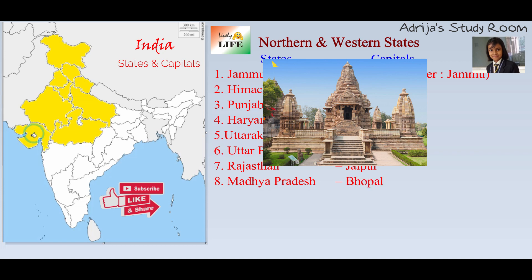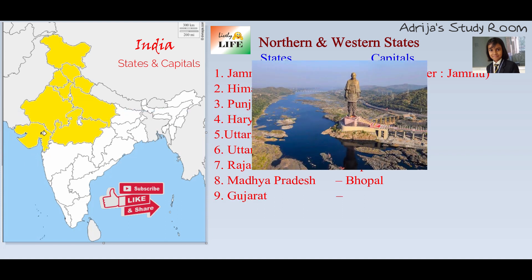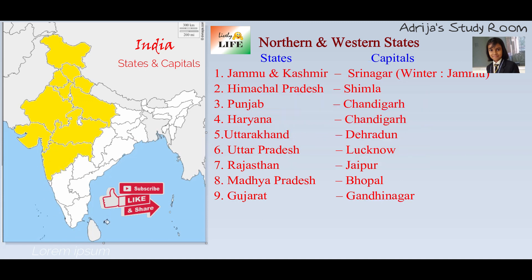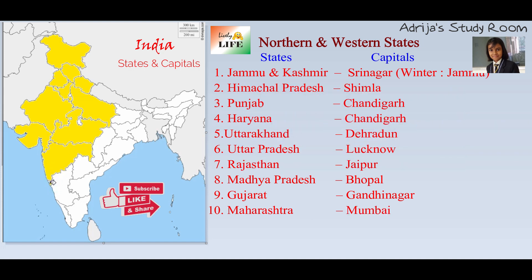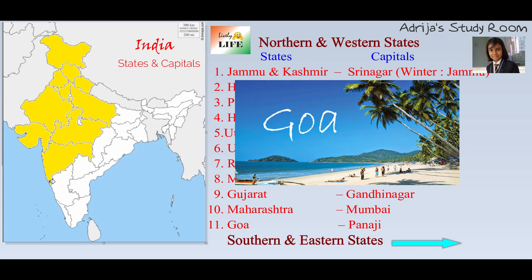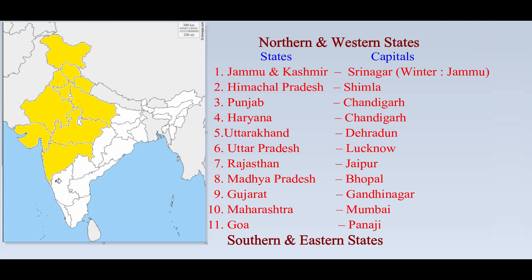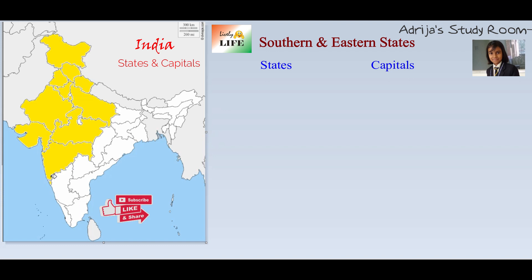This state is Madhya Pradesh, and its capital is Bhopal. This western state is Gujarat, and its capital is Gandhinagar. And this state is Maharashtra, and its capital is Mumbai. Then this small state is Goa.